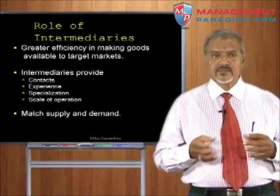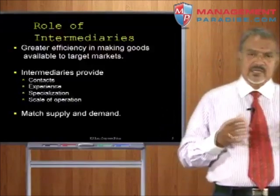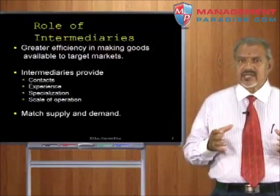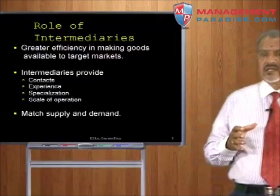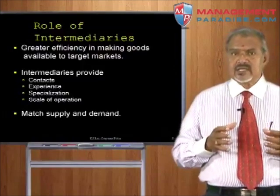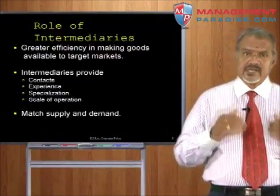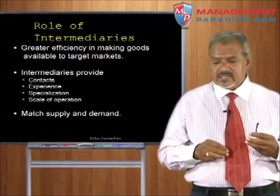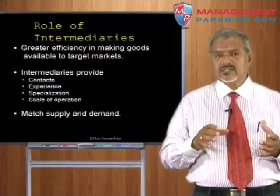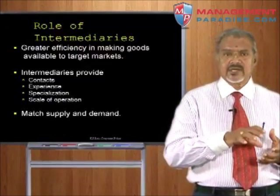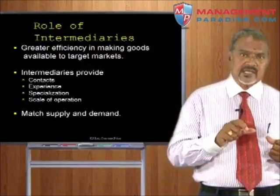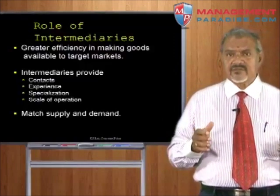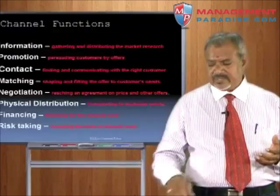Specialization is another role. Sometimes product specializations are there, so when we select intermediaries, we select them in such a way that product experience and product specialization are present — that is a kind of service they provide. Scale of operation: in accordance with the needs of the market, they can increase or expand the scale of operation.